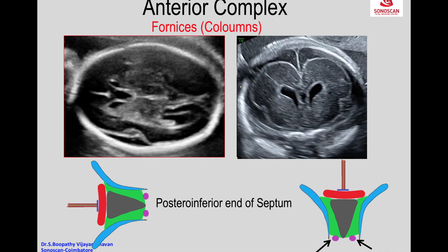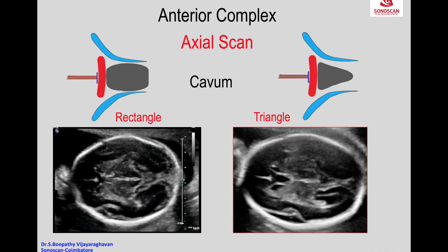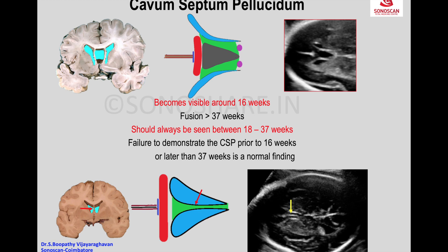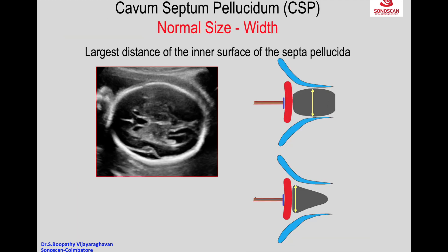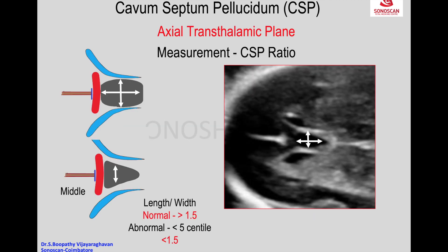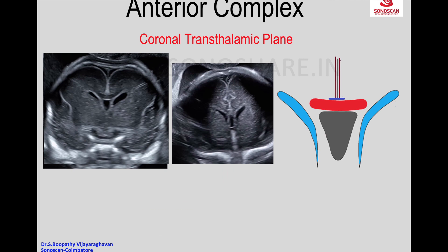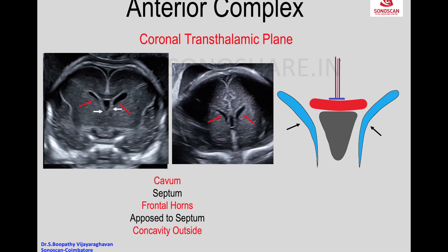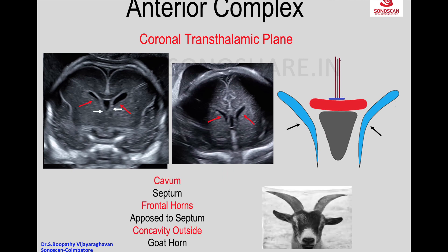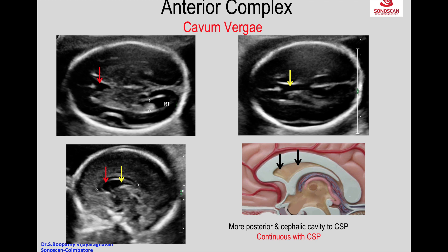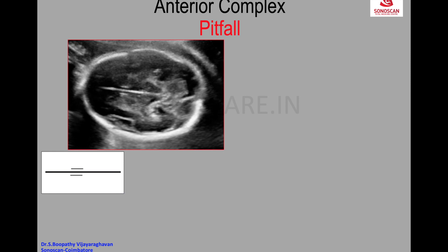The main component is the cavum — later than 37 weeks is a normal finding. When it appears triangular, it is at its largest distance. If it is less than 1.5, it is taken as an abnormal shape of the cavity, outside mimicking the goat horn. The CSP is more posterior and caudal to the CSP.